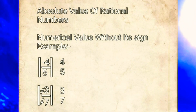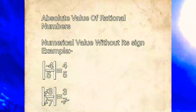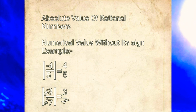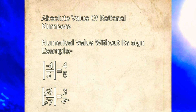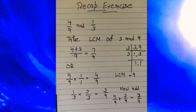The absolute value of a rational number is the numerical value without its sign — neither positive nor negative. The absolute value is denoted by the modulus symbol. For example, |-4/5| = 4/5, because the output is always positive regardless of the sign. Similarly, |-3/-7| = 3/7 — you will always get a positive number.